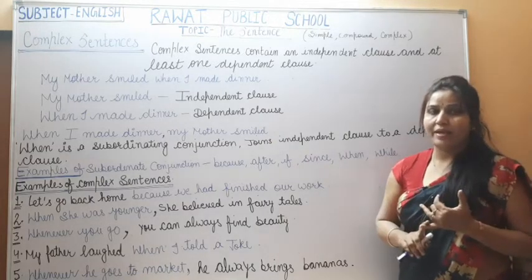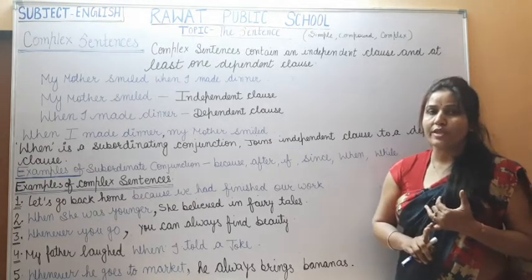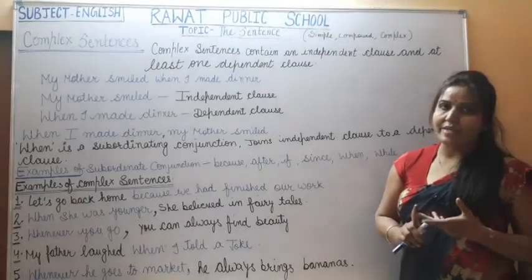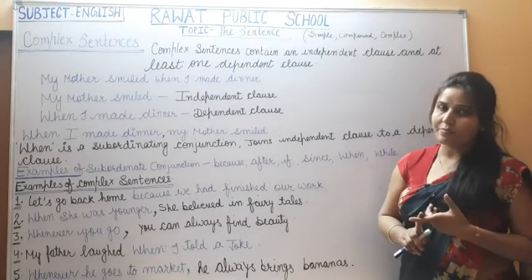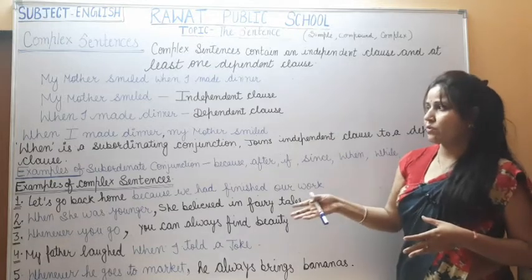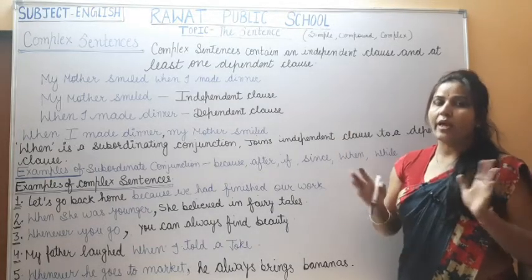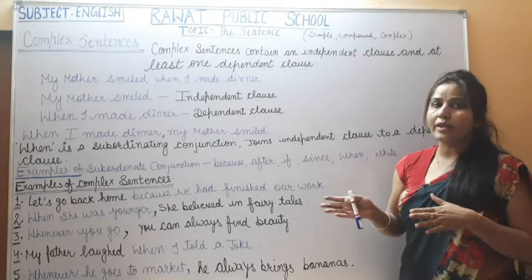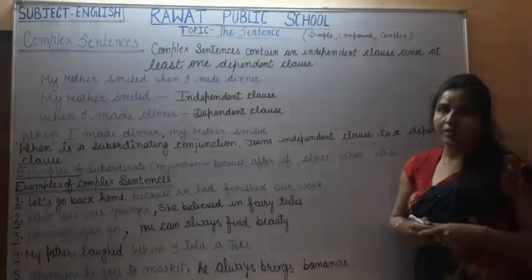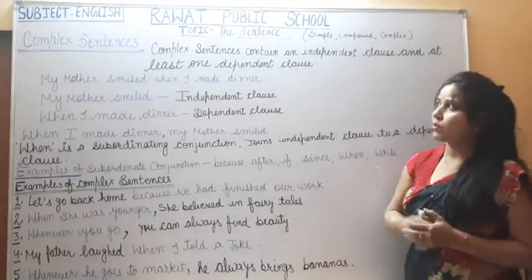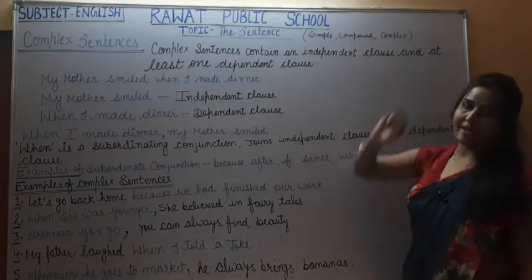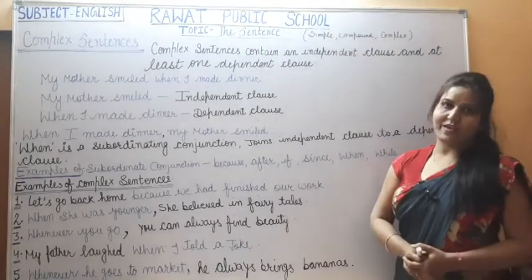So as I explained — simple sentences have at least one finite verb; compound sentences have two independent clauses joined by a coordinating conjunction; and complex sentences have one independent clause and one dependent clause. I think now you all have understood all kinds of sentences: simple, compound, and complex. That's all for today — have a nice day!